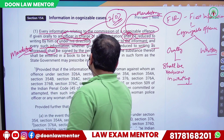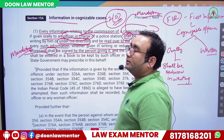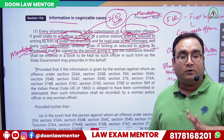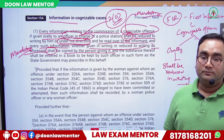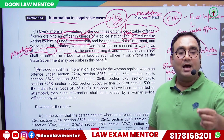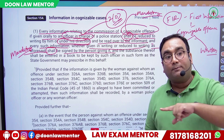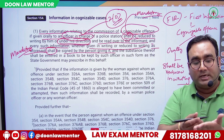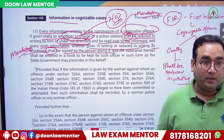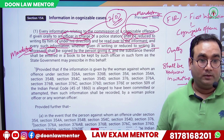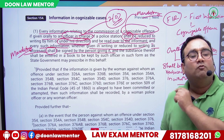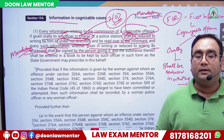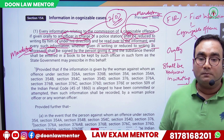Whether the information was given in written form at the police station, or given orally and then reduced to writing and read back — in both cases, it shall be signed by the informant. This signature confirms that yes, the police have written exactly what the informant came to report, and nothing was added by the police on their own.